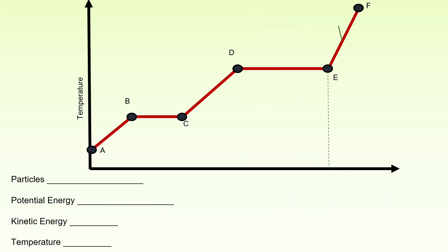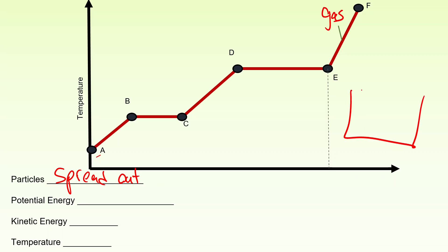In the last section, we have only the gas phase present. The particles are spread out and moving in straight lines until they bump into something and bounce off. As we heat up the gas, the potential energy stays pretty constant, whereas the kinetic energy is going up — and you can tell that because the temperature is going up.